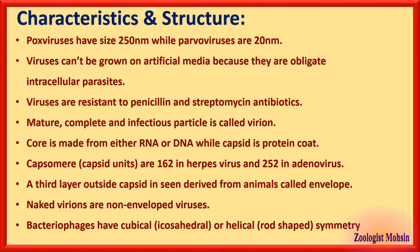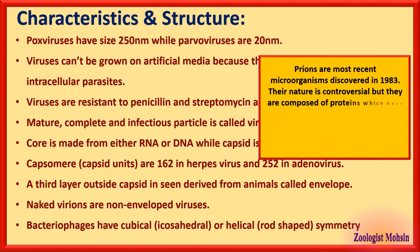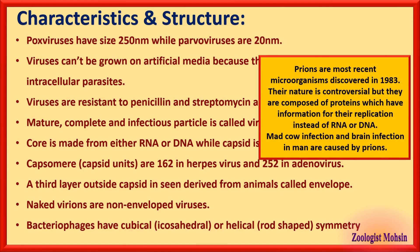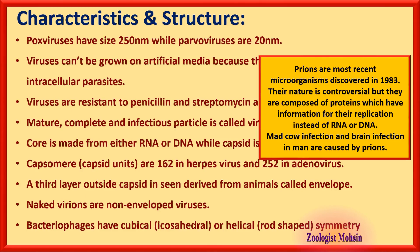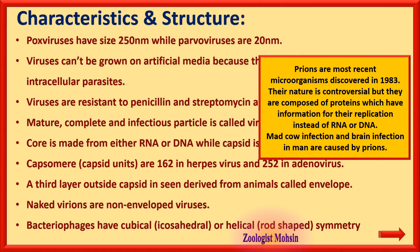Prions are the most recently discovered microorganisms, discovered in 1983. Their nature is still controversial — most scientists believe they are only proteins, while some believe they contain RNA. Prions are composed mainly of proteins that carry information for their own replication, which is contrasting because every other organism uses DNA or RNA as hereditary material. Prions cause medico infection and brain infection in humans.